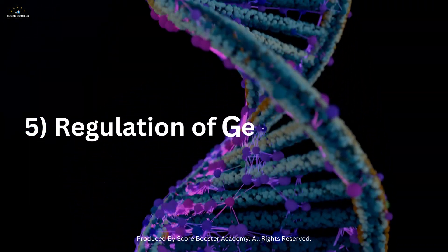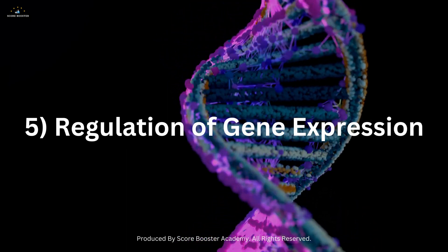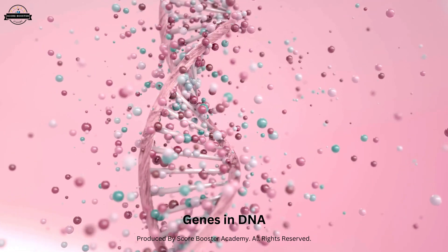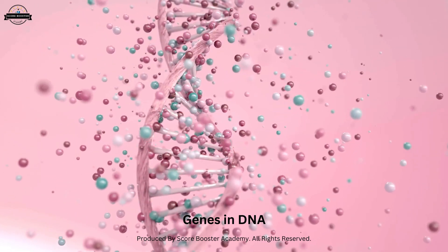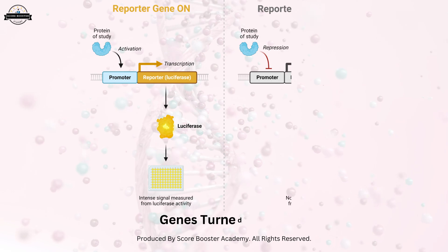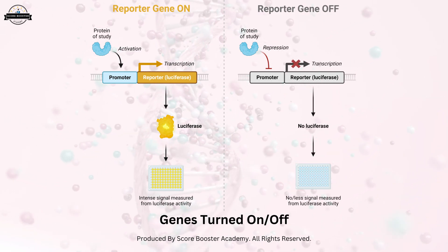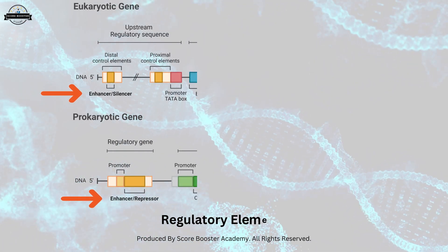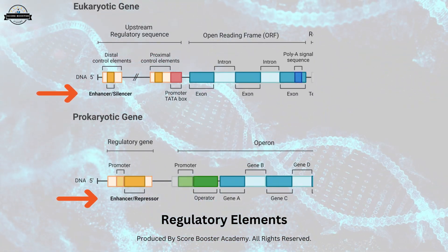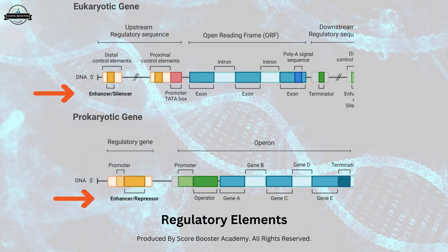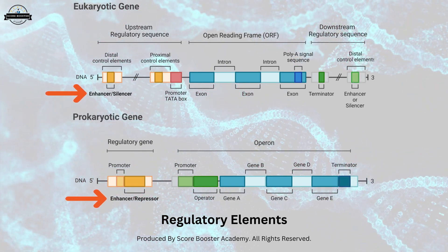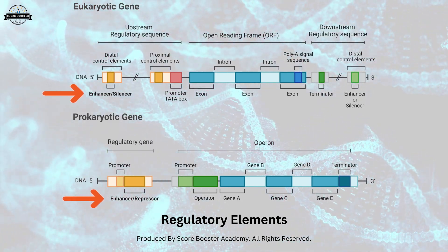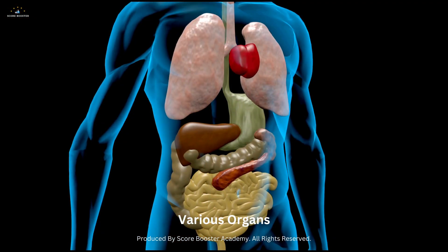Regulation of gene expression. One of the most remarkable functions of DNA is gene regulation. Not all genes are active all the time. Instead, cells tightly control which genes are turned on or off depending on their specific needs. Regulatory elements, such as enhancers and repressors, bind to specific regions of DNA, modulating gene expression. This intricate process allows cells to differentiate and specialize, forming various tissues and organs during development.